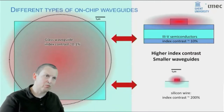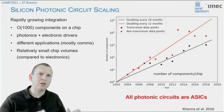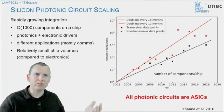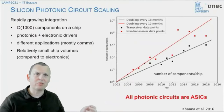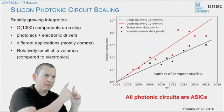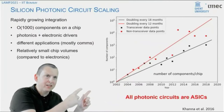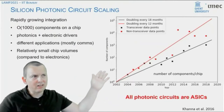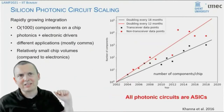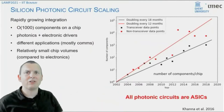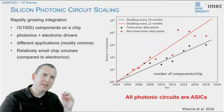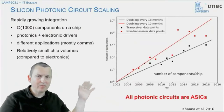That's what makes it possible to dramatically increase the number of components on a silicon chip. We've seen over the past decades a kind of Moore's law on silicon photonics, where there's a steady increase of circuit complexity and numbers of circuits on a chip. Now, if you look at this graph, there's one thing you should notice: all the circuits on this graph are ASICs — application-specific photonic integrated circuits. They have been designed and fabricated for one particular purpose.